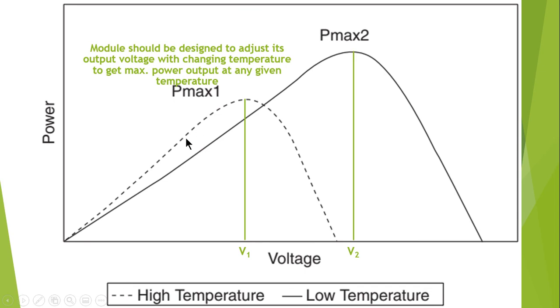Similarly, these are the PV curves. The dotted one indicates the curve with higher temperature, and the smooth curve shows the power delivery at the lower temperature.